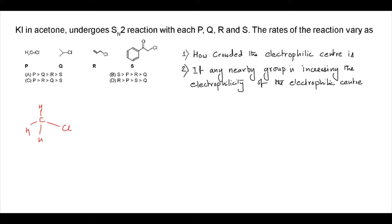So the reaction is, of course, as given in the question, an SN2 substitution reaction. Compound P is less crowded, but there is no nearby group which can increase the electrophilicity of the central carbon atom.